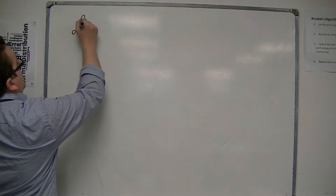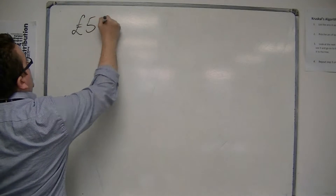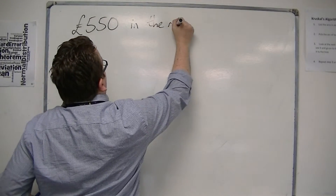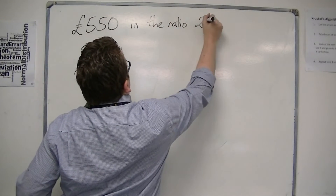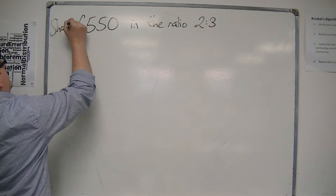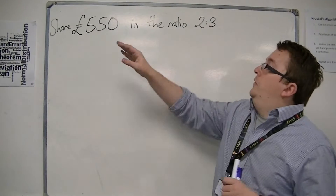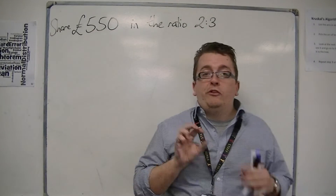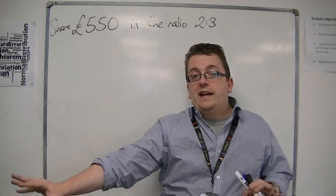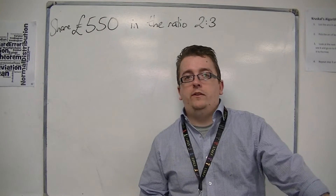For example, if we had to share £550 in the ratio 2 to 3, the idea is that £550 is going to be split up so that person A gets 2 shares and person B gets 3 shares.